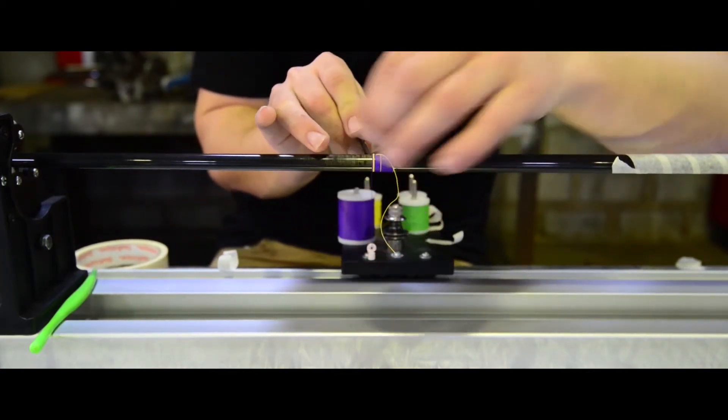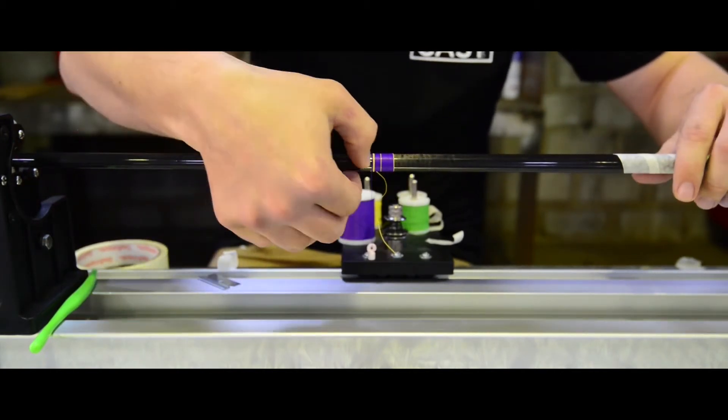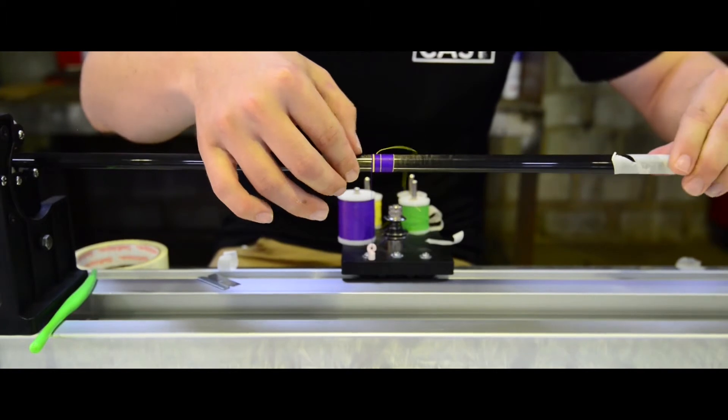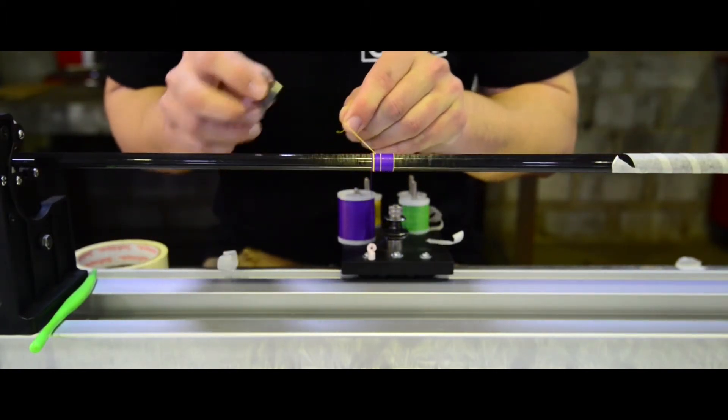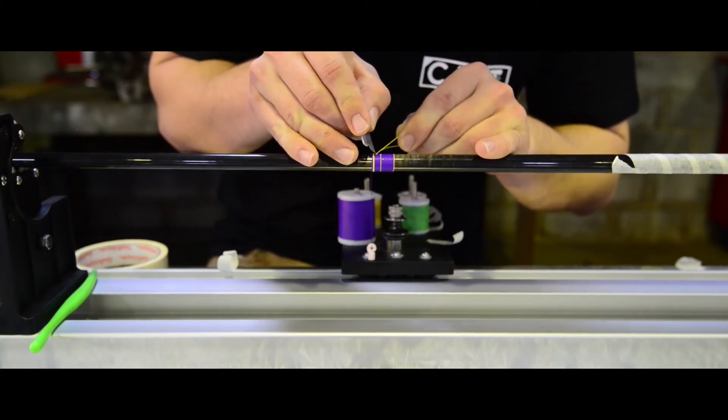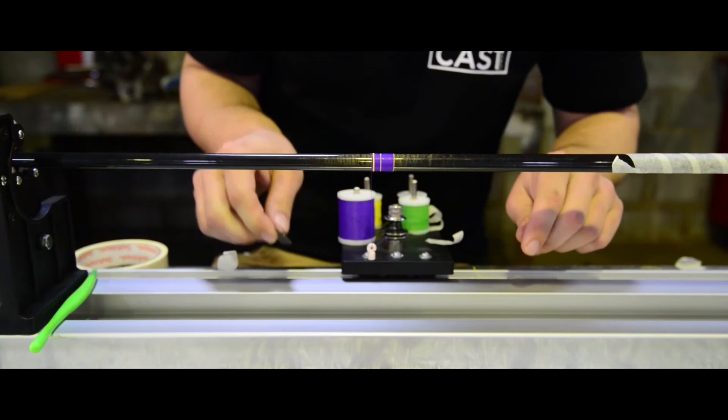Finally trimming off the tag ends. Again pulling on that tag end so we can get a bit of thread separation, just enough I can put the blade down between cutting it off.